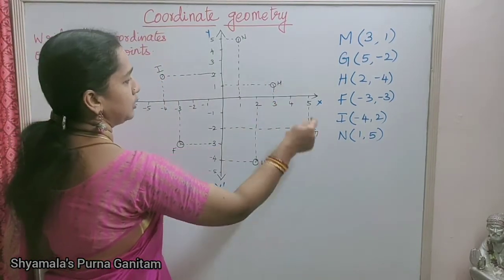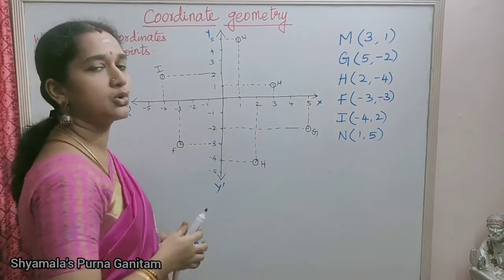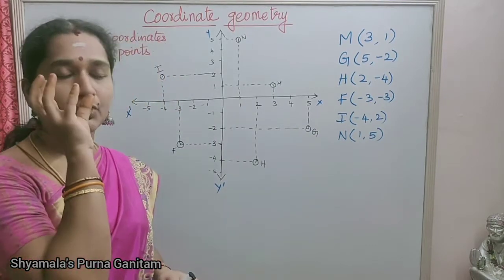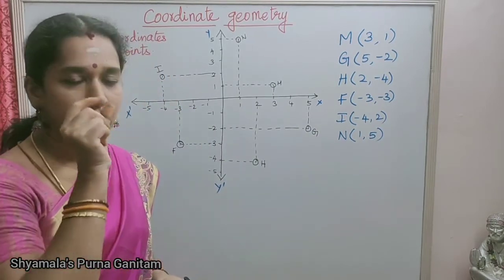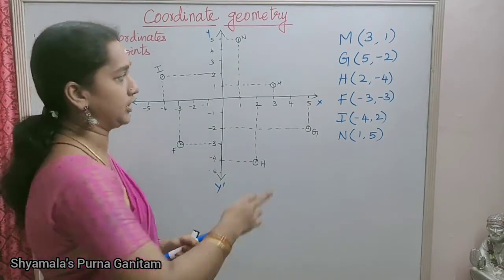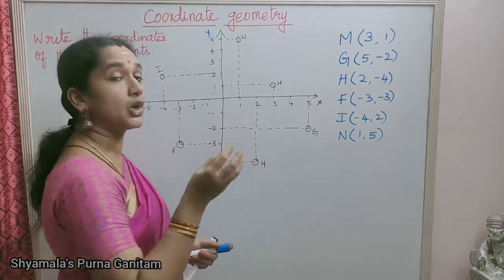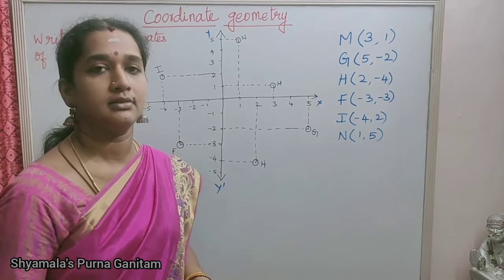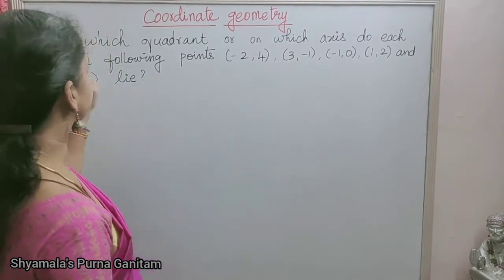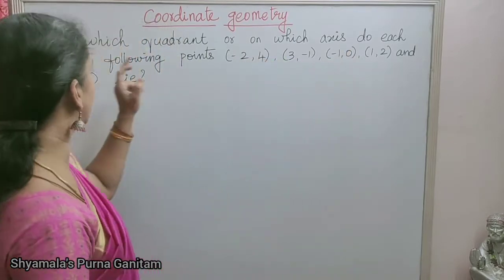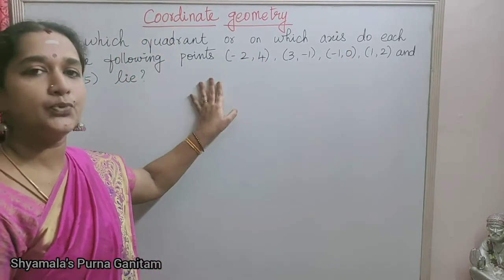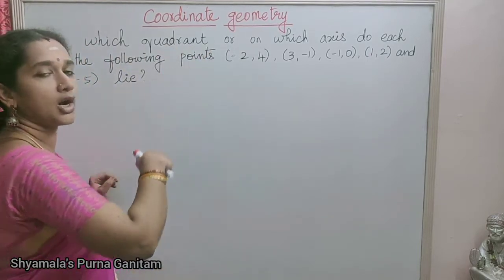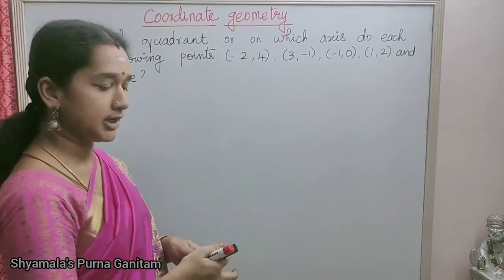So I have completed all six coordinate points they asked us to locate. When writing coordinate points, you write the x-axis point first, then the y-axis point. This is the next exercise sum: in which quadrant or on which axis do each of the following points lie? We will locate these points in the Cartesian plane and find on which quadrant or axis they lie.